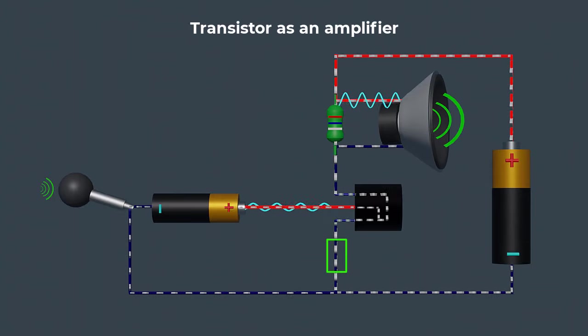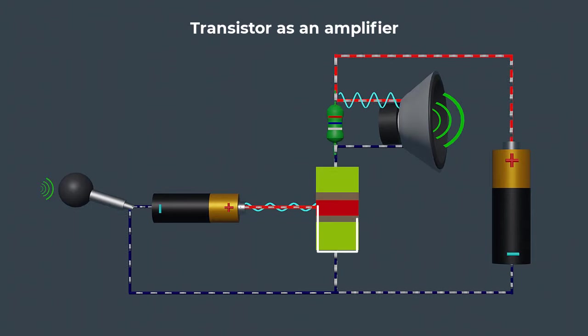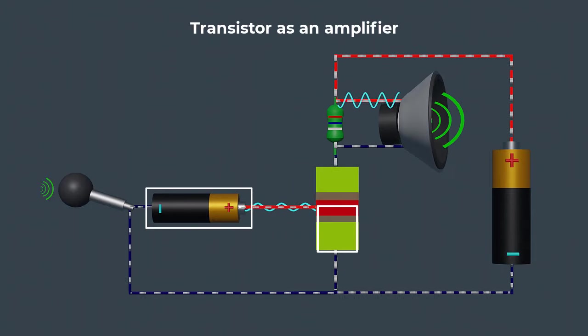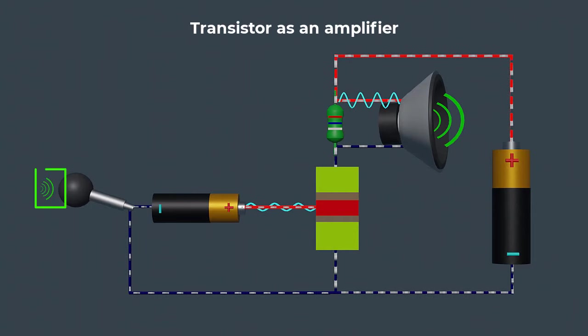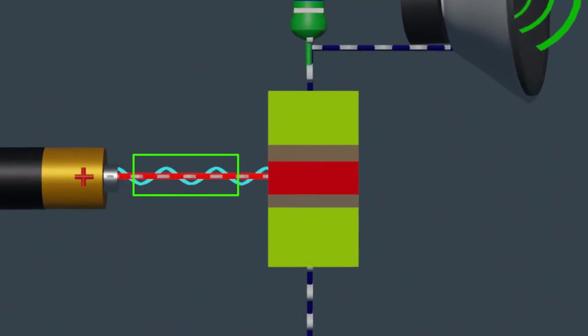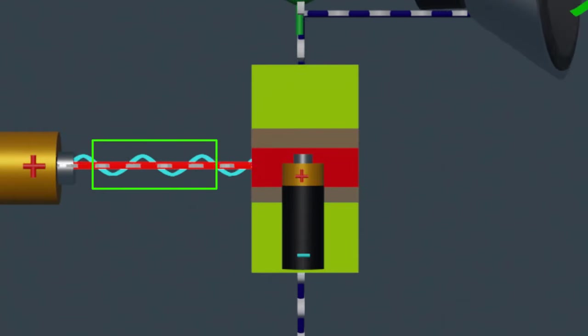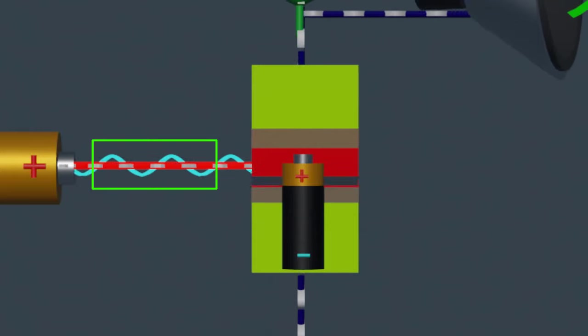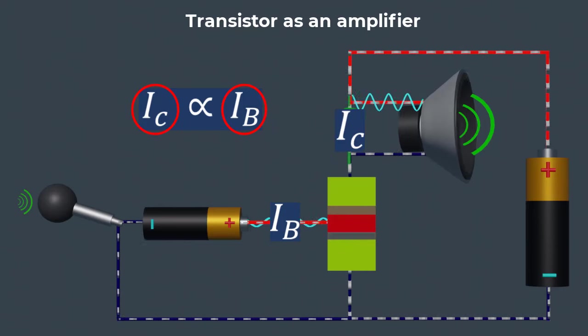The common emitter configuration is commonly used for amplification. Here, the base-emitter junction is forward biased and the collector-base junction is reverse-biased. Small input signal is applied to the base-emitter junction. This signal varies the voltage across the base-emitter junction, causing changes in the width of the depletion region, and as a result the base current changes. These changes in the base current cause proportional shifts in the collector current, leading to signal amplification.